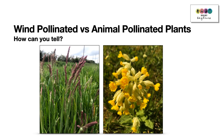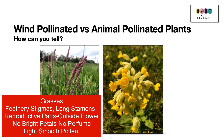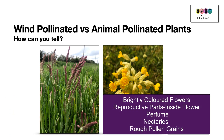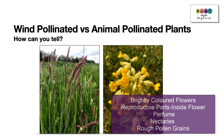The differences between wind and animal pollinated plants are often examined. Wind-pollinated plants such as grasses have feathery stigmas, long stamens, all reproductive parts hanging outside the flower, no bright petals, no perfume, and they produce lots of light, smooth pollen. Animal-pollinated plants generally have brightly coloured flowers with reproductive parts inside the flower, nice perfumes, nectaries that produce nectar, and rough pollen grains.